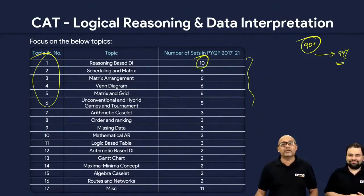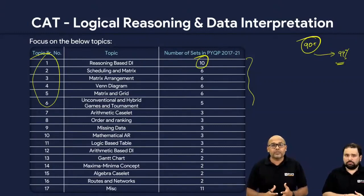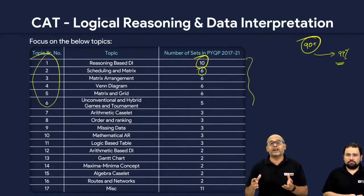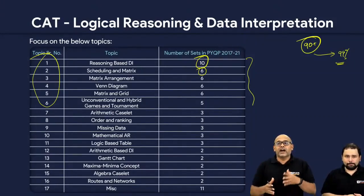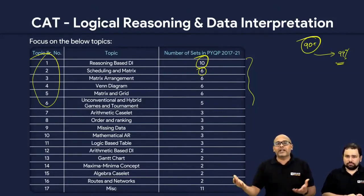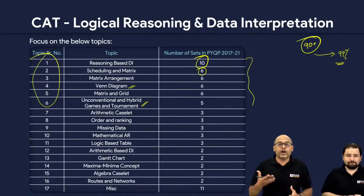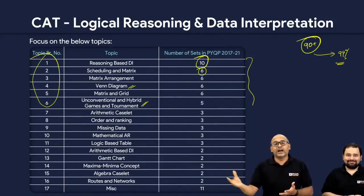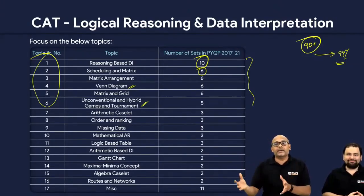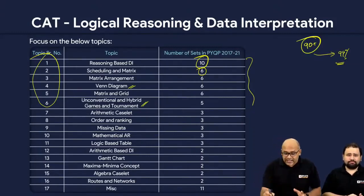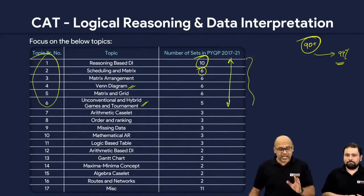The most important topic is reasoning-based DI — data interpretation based on reasoning. Then matrix-based questions: not linear arrangements per se, but questions dealing with 5 people from 5 cities with 5 shirts, where data is given in a grid. Then you have Venn diagrams. Then conventional and unconventional games and tournaments — your round robin league, knockout tournaments like tennis, Wimbledon, CWG — those come under this category. These are your main focus areas.